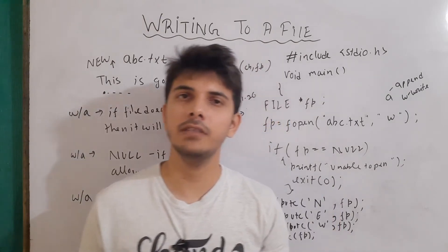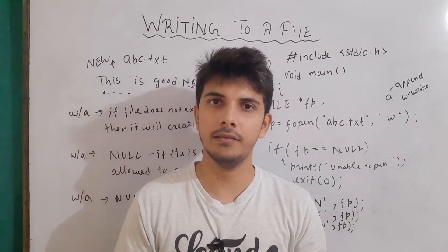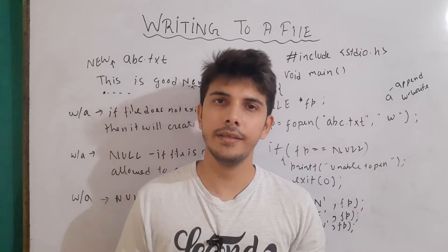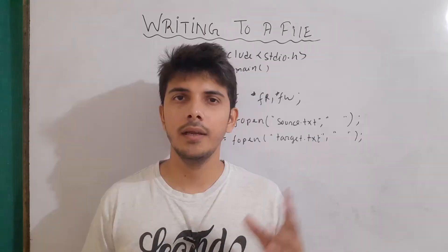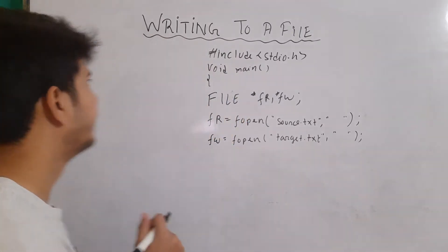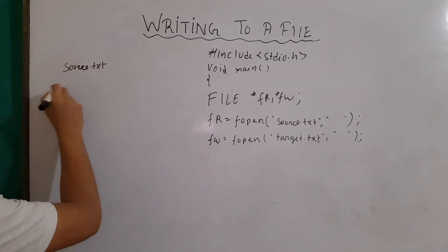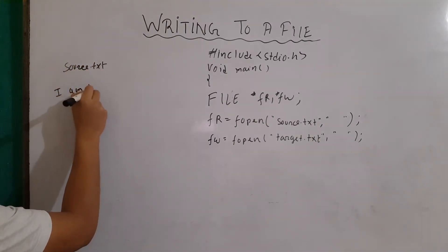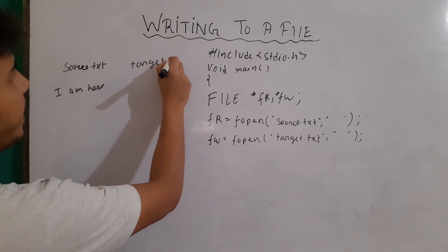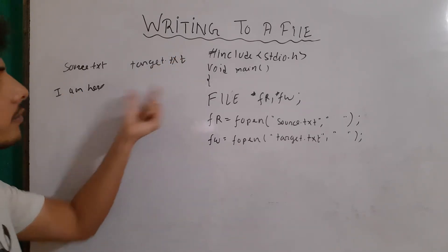Now let's make a program in which we will read the content from one file and write that content to another file. So basically we will be performing both operations — reading from one file and writing to another. Let's say we have two files: source.txt and target.txt. The content of source.txt is 'I am here', and we have to write that content to target.txt.